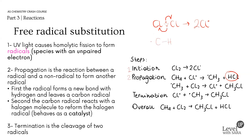Looking at the mechanism: we have a C–H bond and a chlorine radical. The chlorine forms a new bond with the hydrogen — one electron from the hydrogen and one from the chlorine come together to form HCl. The remaining electron is left on the carbon, giving the CH₃ radical. We can write it as a structural formula or as CH₃ with a radical dot — either is correct.